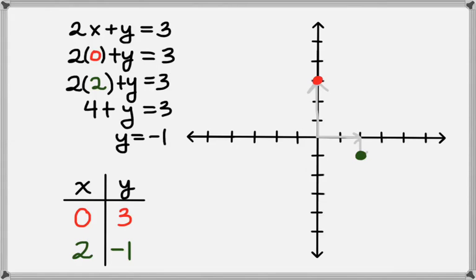Now that we have two points on our line, we can draw the line through those two points. Now, we've graphed the line 2x plus y equals 3.